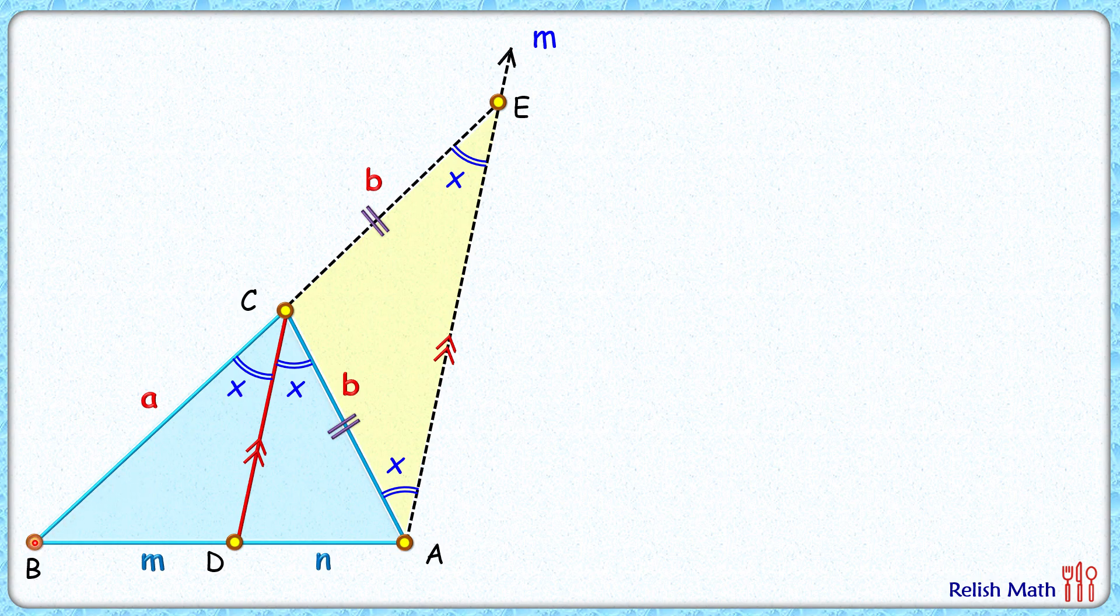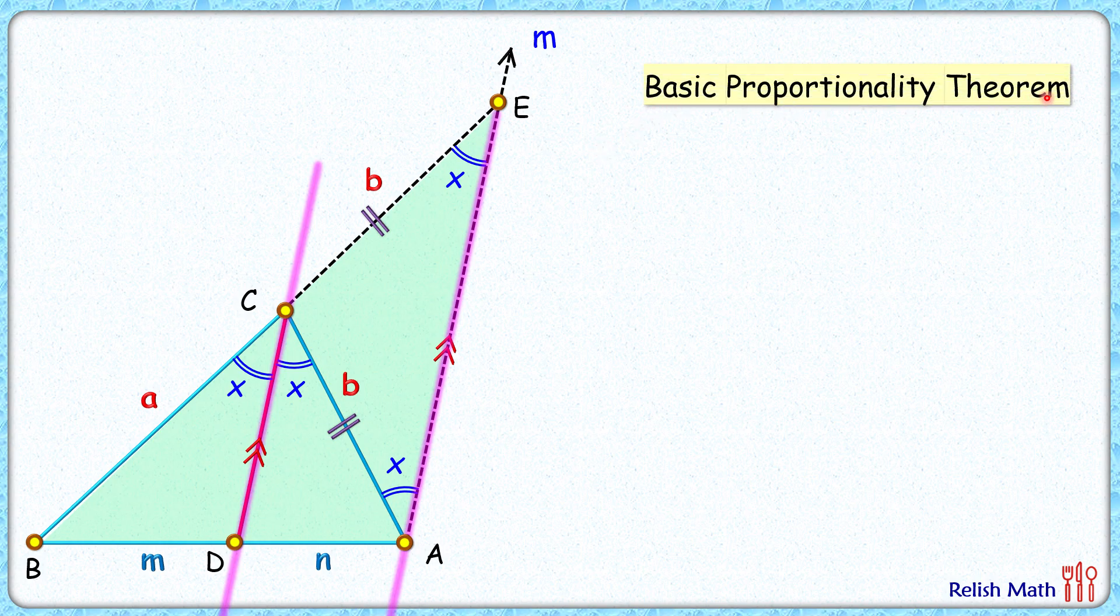Now in this complete triangle BAE, this green triangle, we have got your base length side length as EA and CD is parallel to this one of the sides. So applying basic proportionality theorem, which says if you draw a line parallel to one of the sides of the triangle, then this parallel line will cut the other two sides in equal ratios. That means your BC upon CE length will be equal to BD upon DA, or A upon B will be equal to M upon N, and that's what we had to prove.